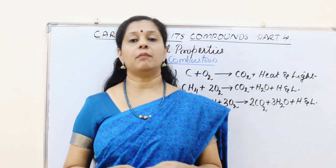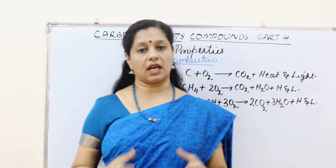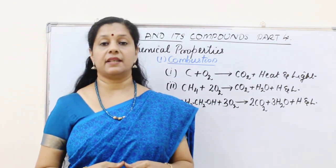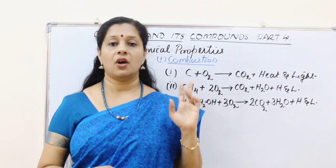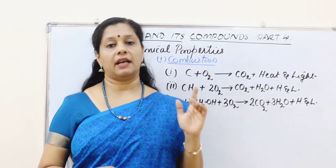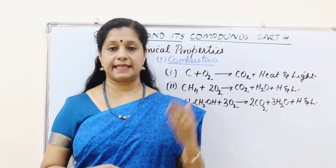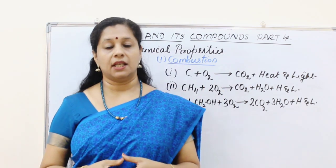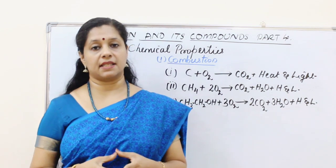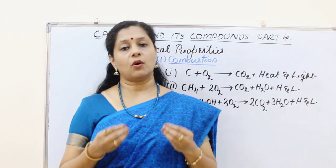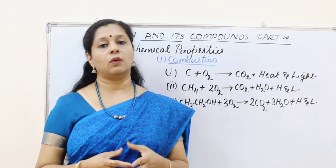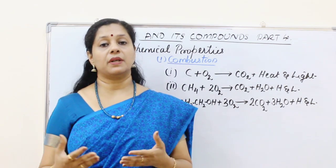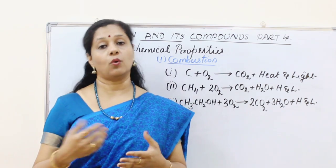Now we will learn the chemical properties of hydrocarbons or carbon compounds in general. There are four chemical reactions that we have to study: combustion, oxidation, addition, and substitution. What is combustion? Combustion means burning. So usually burning happens in the presence of oxygen. When coal or carbon is burned, we get only carbon dioxide. But all the carbon compounds usually emit heat and light also.